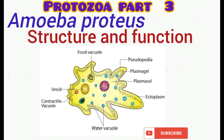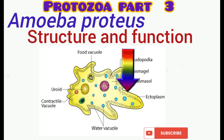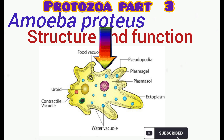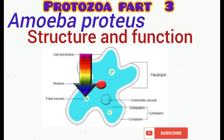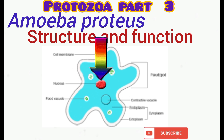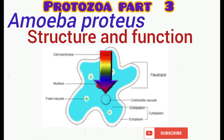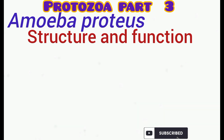The structure of Amoeba proteus includes the pseudopodia, used for movement; the cytoplasm, divided into ectoplasm and endoplasm; the food vacuole; the nucleus; and the contractile vacuole, which is used for osmoregulation.